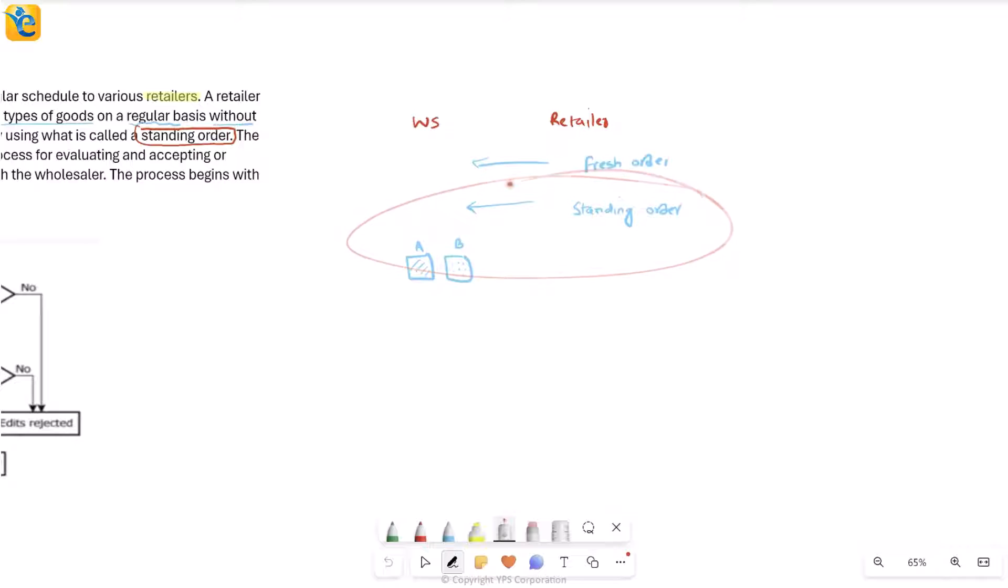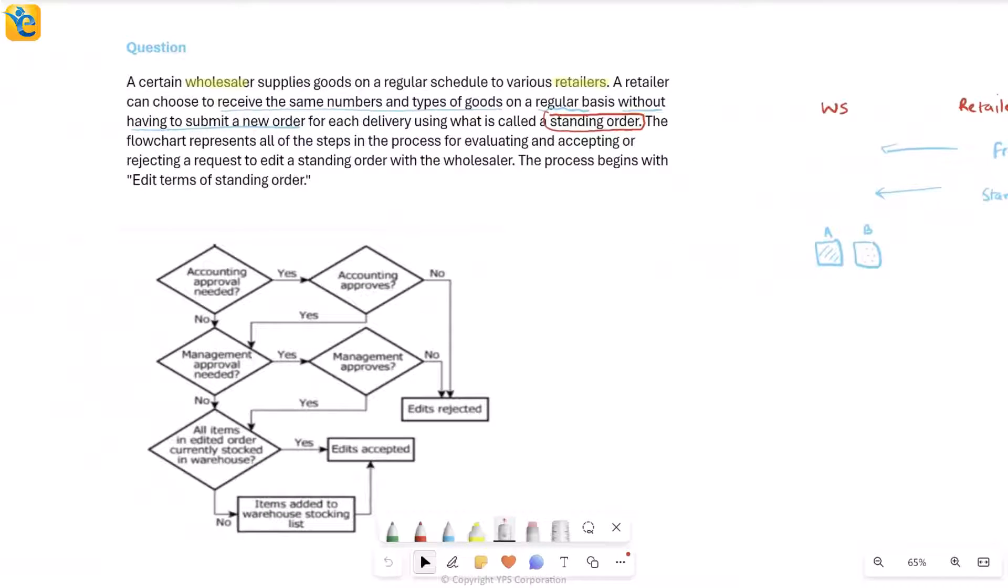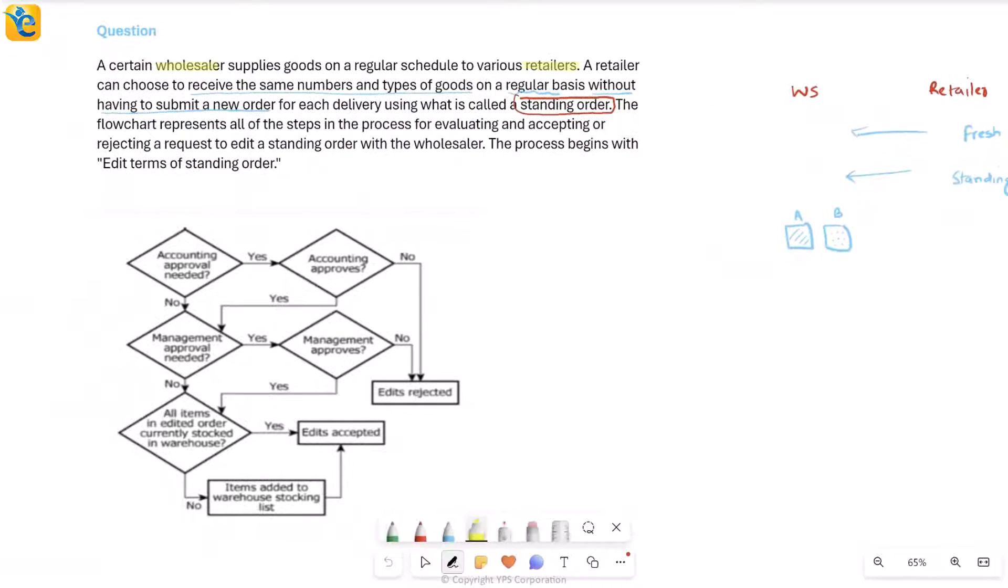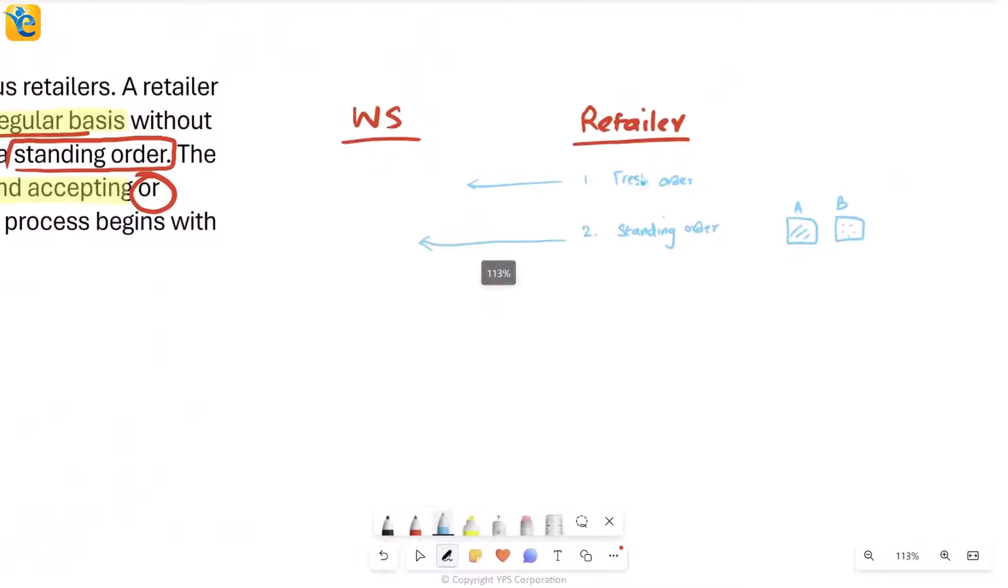Now let's read further. The flowchart represents all the steps in the process for evaluating and accepting or evaluating and rejecting a request to edit a standing order. Now that is a new thing—till now we understood what a fresh order is and what a standing order is, but now this entire flowchart is about editing a standing order.